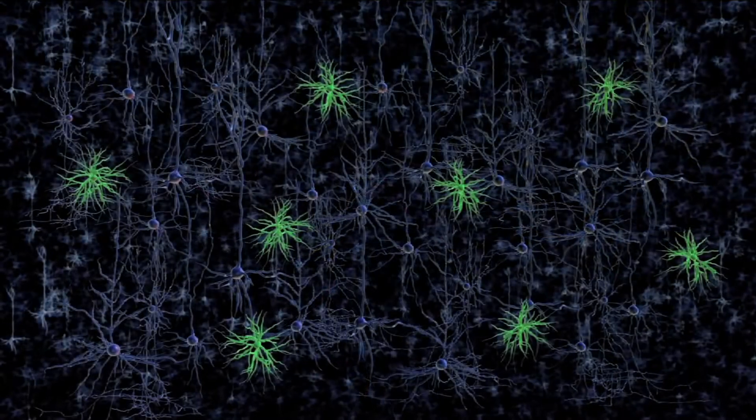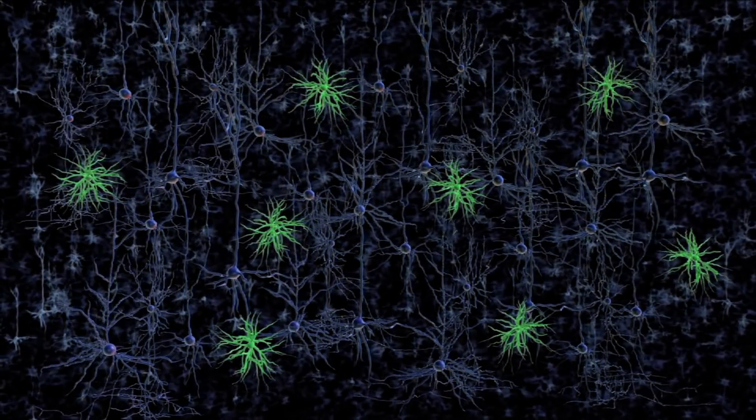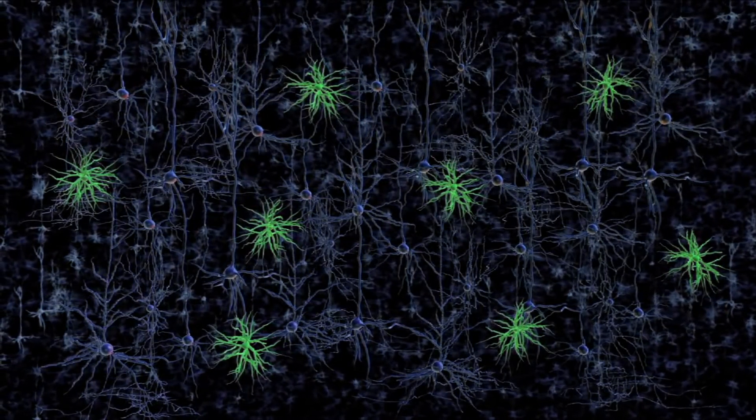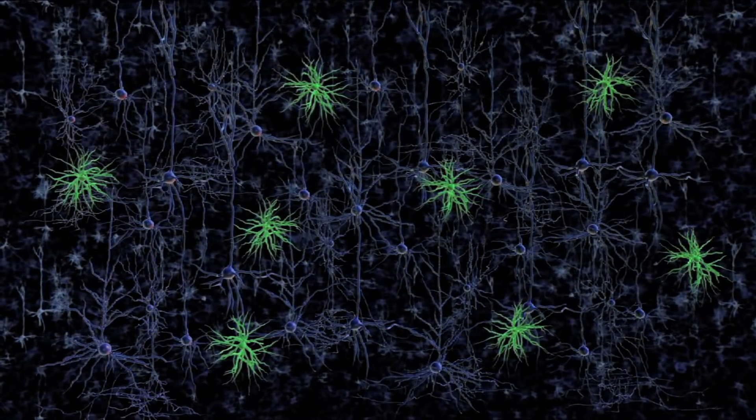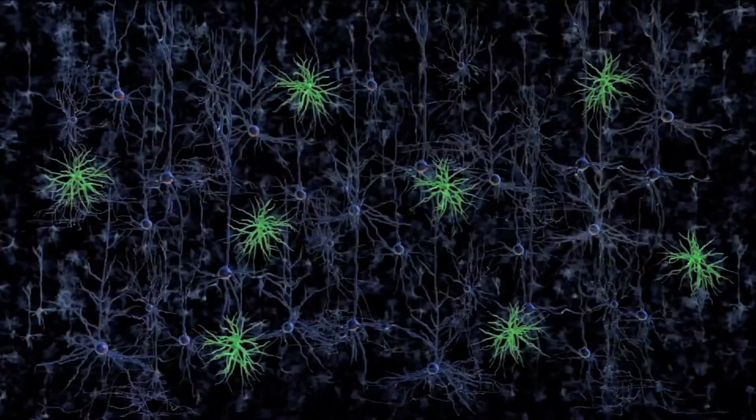For example, researchers can deliver the piece of DNA that encodes for channelrhodopsin into a set of basket cells, shown here in green. Then pulses of blue light activate only the basket cells while the other cells,